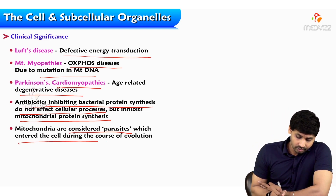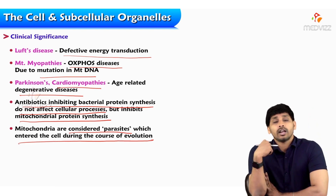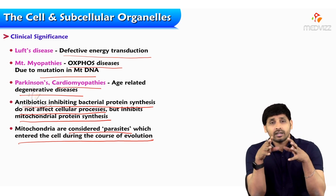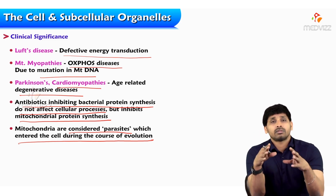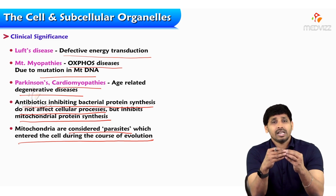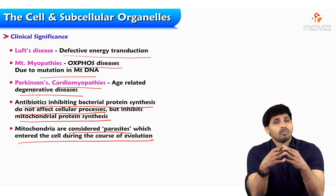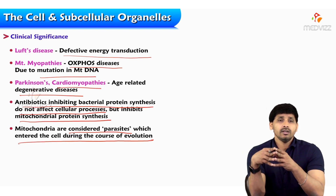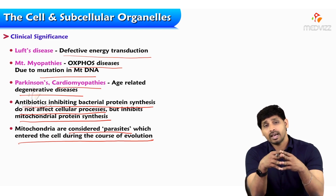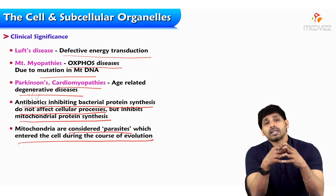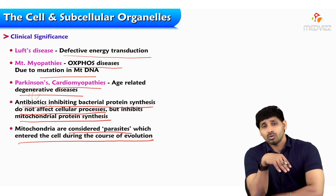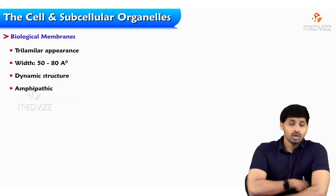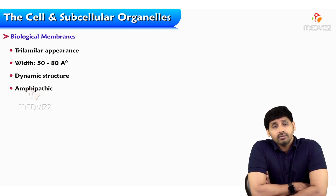Mitochondria is considered a parasite that entered the cell during the course of evolution — it was not present from the beginning. At the time of early life, the transition was from prokaryotes to eukaryotes. Mitochondria is not present in prokaryotes but is present in eukaryotes. Researchers say that mitochondria is considered a parasite which entered during the course of evolution. That's all about mitochondria — thanks for listening.